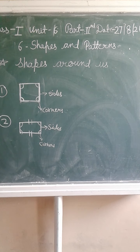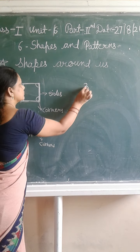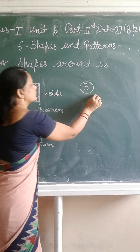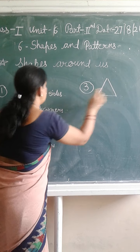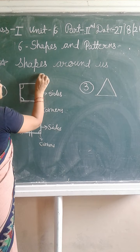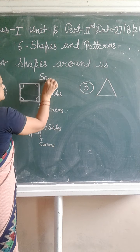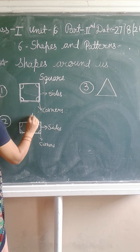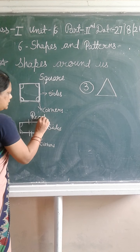All sides are equal in the square and opposite sides are equal in the rectangle. Third shape — Rectangle. Square. Rectangle.